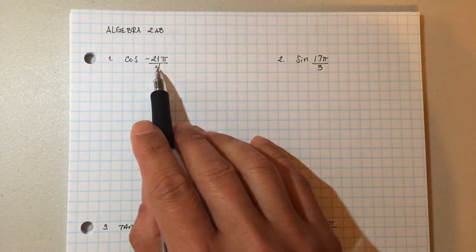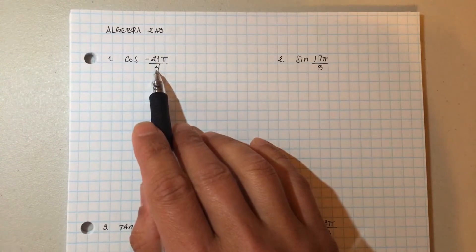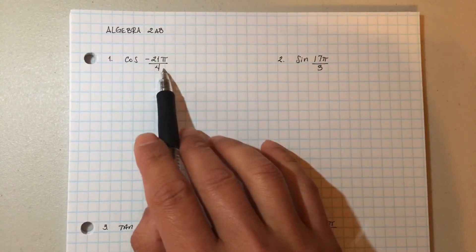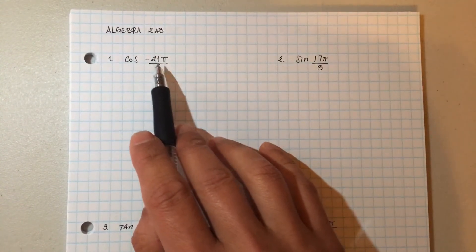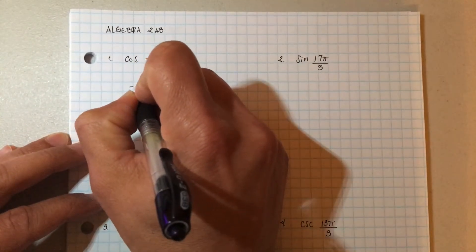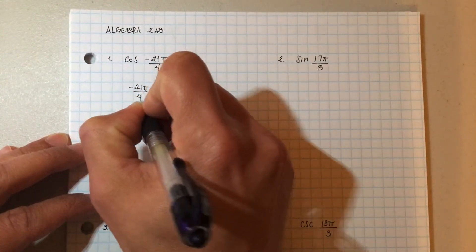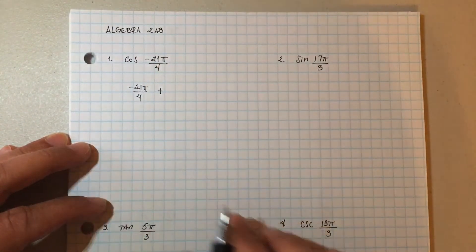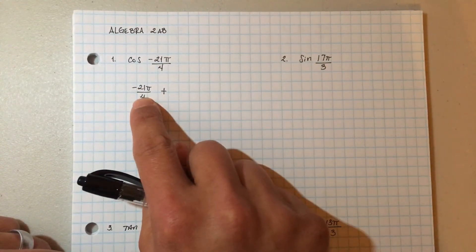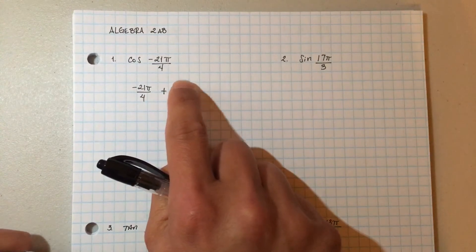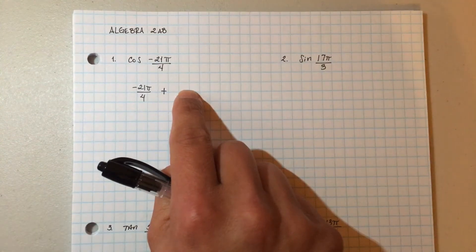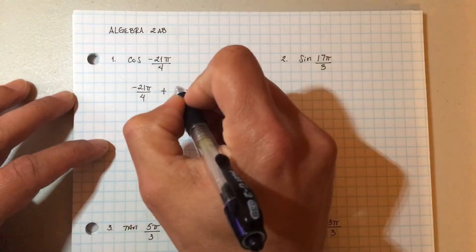If I ask you how many times does 4 go into 21, you're going to say 5. But because I want to make this into a positive angle — I don't want a negative because that just makes it too difficult — I'm going to bring it back. This is a negative angle, negative 21π over 4, so I'm going to add to make it positive. If I do 5, because 4 goes into 21 five times, negative 21 plus 20 would give me negative 1 and I don't want a negative angle. So instead of using 5, I'm going to use 6.